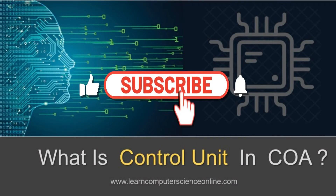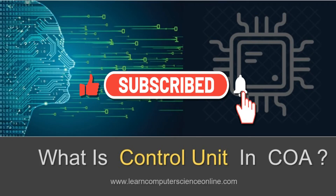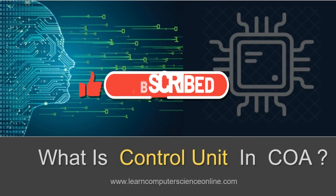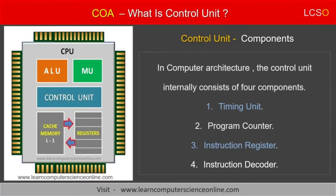We are now clear on how the control unit works. Let us now discuss four important internal components of the control unit. The control unit has four important components: first, the timing unit; second, the program counter; third, the instruction register; and fourth, the instruction decoder. Let us now briefly discuss the functions of each component of the control unit.